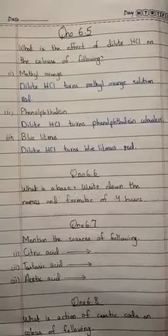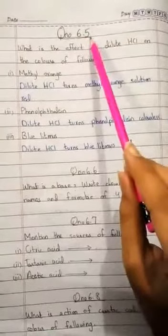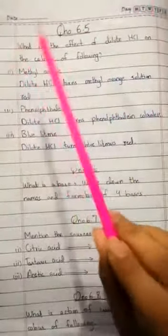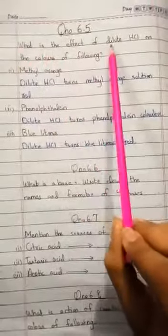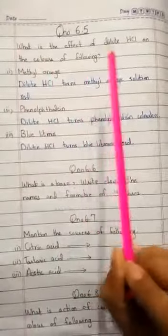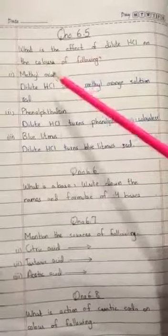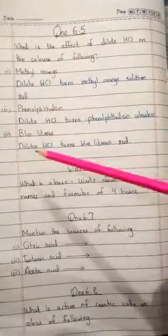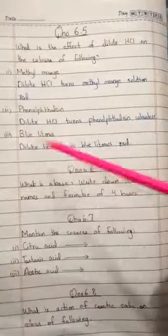Next question is question number 6.5: What is the effect of dilute HCl on the color of the following substances?